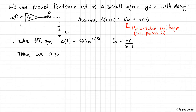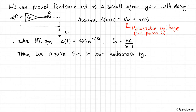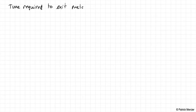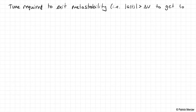In order for the circuit to exit the metastable region, we require g to be greater than one. So we require g > 1 to exit metastability. But how much time does this require? That's what we'd like to model: the time required to exit metastability — how long to get away from point C back towards A or B — such that a(t) gets larger than ΔV to reach a valid logic level.